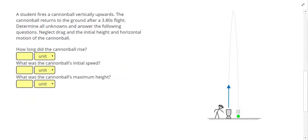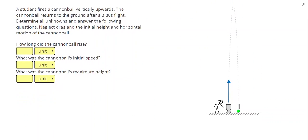Let's take a look at one more. So in this one, it says, a student fires a cannonball vertically upwards. The cannonball returns to the ground after a 3.80 second flight. Determine all unknowns and answer the following questions. Neglect drag and the initial height and horizontal motion of the cannonball.